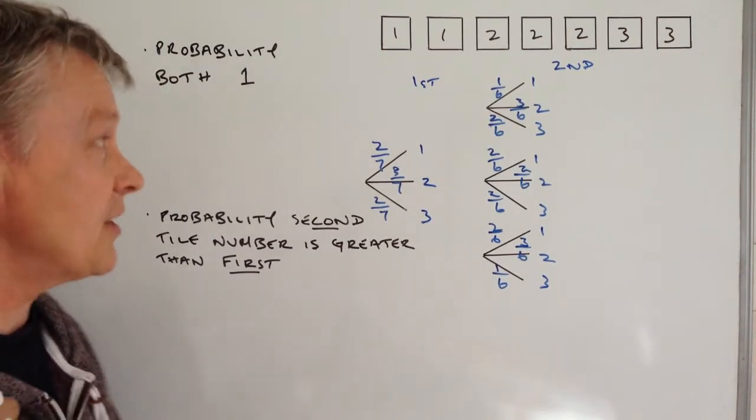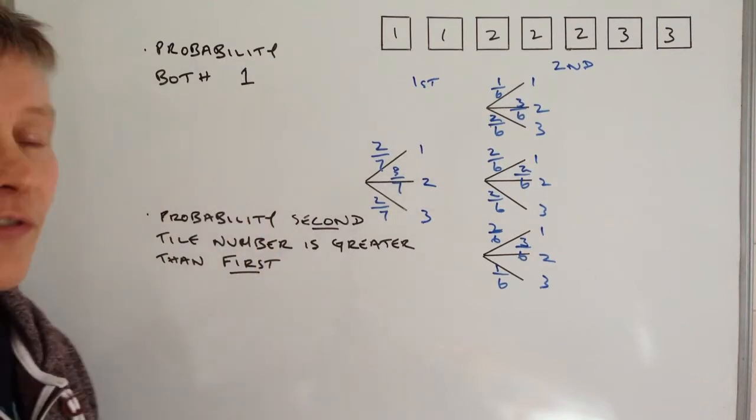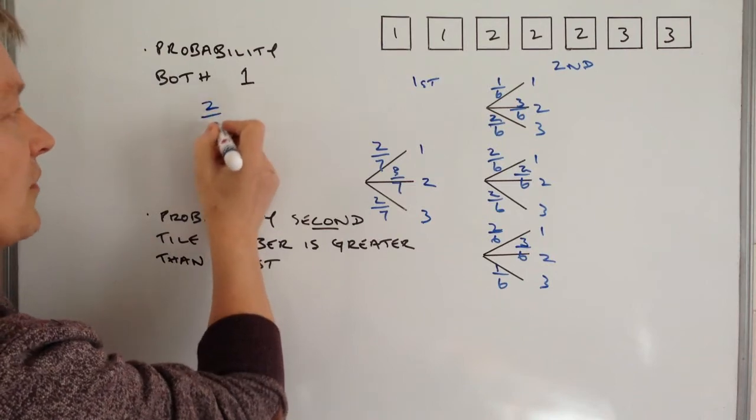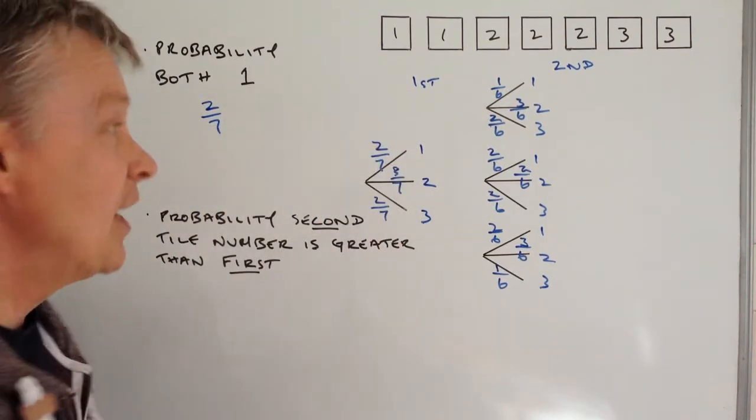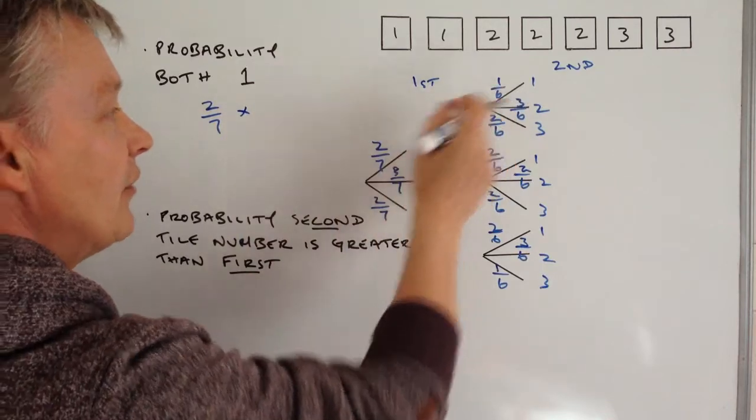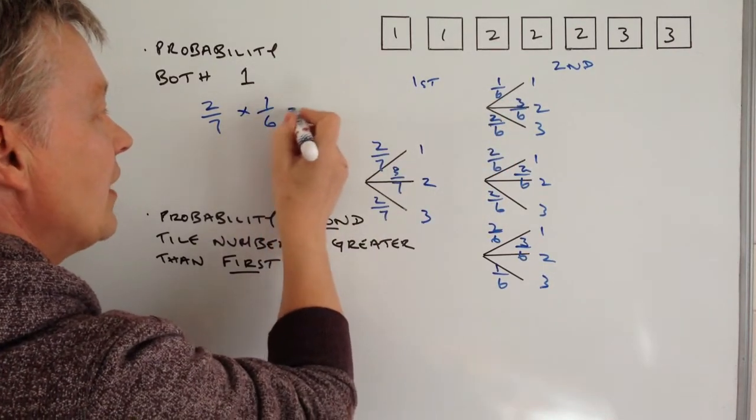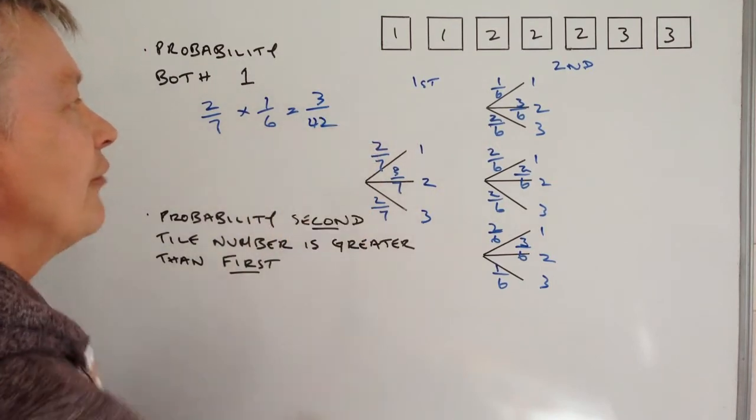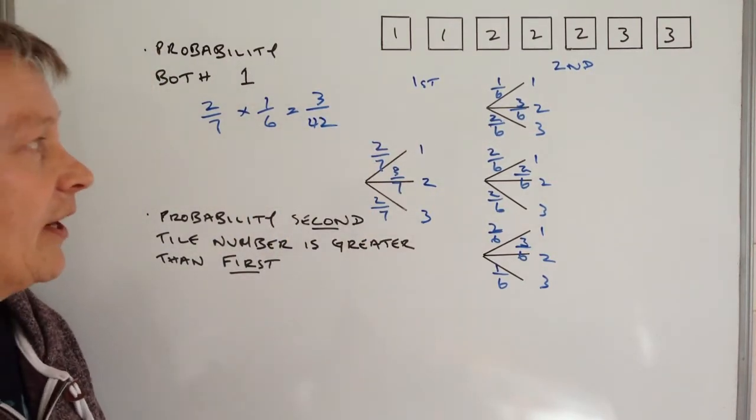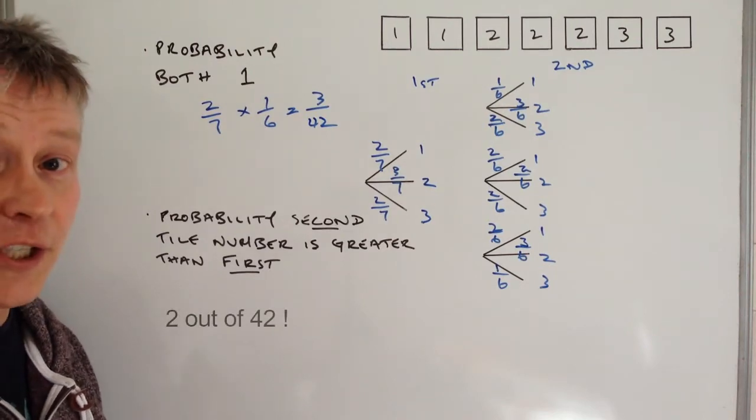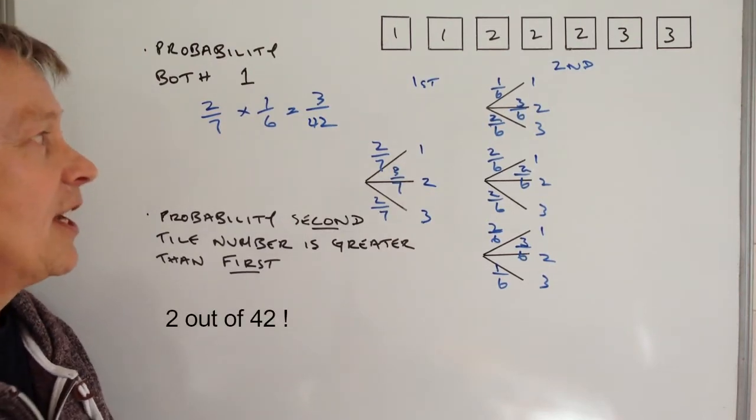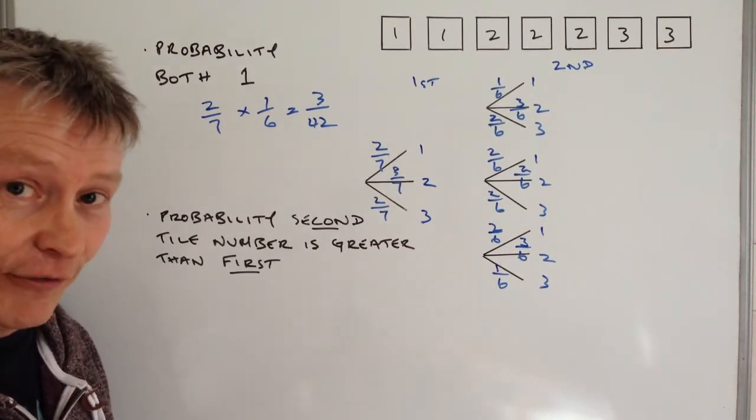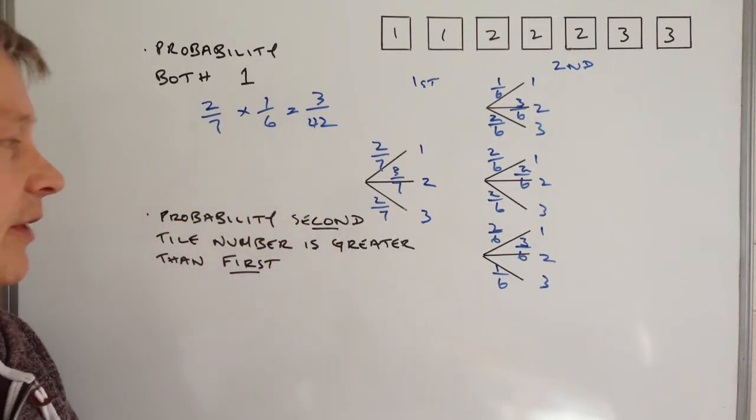We're in a position now that we can answer the question. So let's have a look at the probability of both number one. What we're saying is there was a two out of seven probability for the first pick. For the second pick there was a one out of six. So if we multiply those out, that means we get three out of 42. So that means that for every 42 times he does this, three times he's going to pick a number one each time.